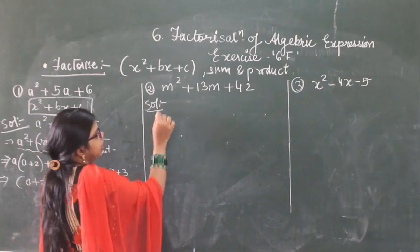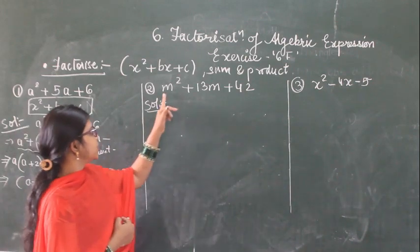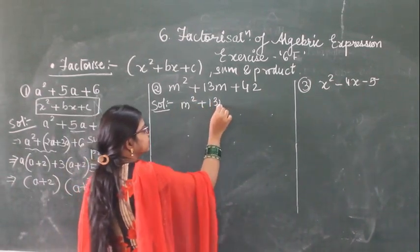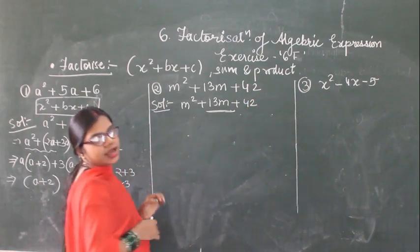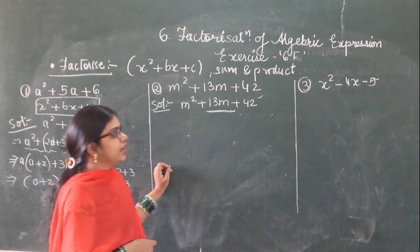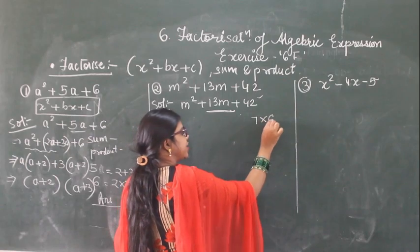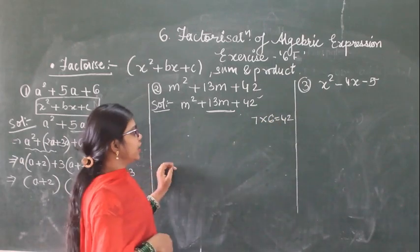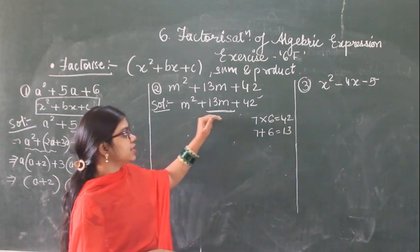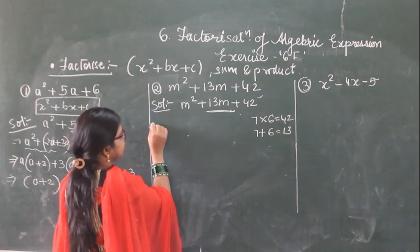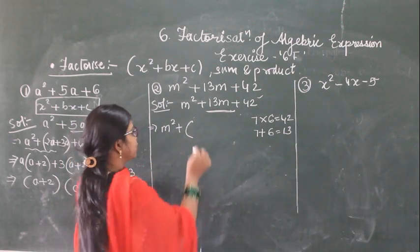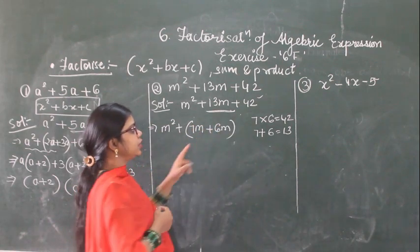So what you are given here is m square plus 13m plus 42. This is also in the form of x square plus bx plus c. Now I will see the middle term. I will see the multiplication of the last term. So first see the product — by what number will you multiply to get 42? If I multiply 7 into 6 I will get 42.